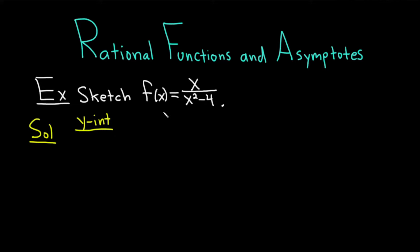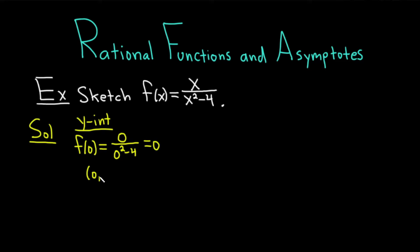To find the y-intercept, we always plug in 0. So f of 0 is equal to 0 over 0 squared minus 4. Whenever you have 0 up top, the whole thing is just 0. In this case, when x is 0, y is 0. So the y-intercept is (0, 0). I'm going to put this in a box because we're going to use it to help us graph.